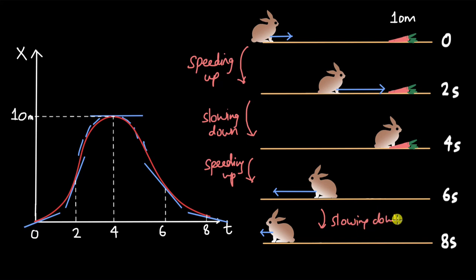In the last section, from six to eight seconds, the slope is still negative but decreasing in steepness — the line is getting less and less steep — which means the rabbit is slowing down, going in the negative x direction but decelerating. The big idea here is that the slope of the tangent in position-time graphs gives us the instantaneous velocity, and the sign of the slope — whether positive or negative — as well as the steepness of the slope, gives us more information about the instantaneous velocity at any time instant.